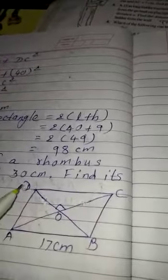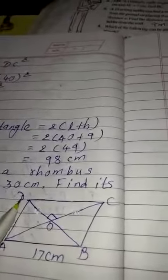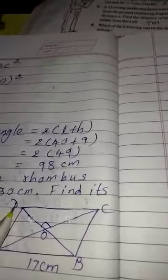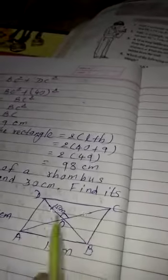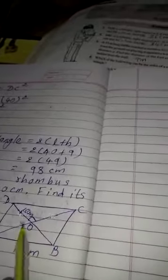Now, these two diagonals are given. Suppose, diagonal BD, its length is 30 cm. Then, OD is equal to 15 cm. Say, diagonal AC. Suppose, diagonal AC is 16 cm. Then, OC is equal to 8 cm.